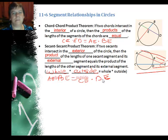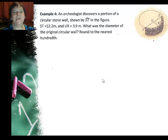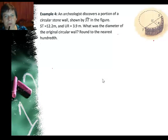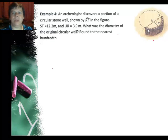So let's go ahead and apply these. We have an archaeologist discovers a portion of a circular stone wall shown by arc ST in the figure. So the stone wall is right here on arc ST. We know that ST, the segment, this chord is 12.2 meters, so they took some tape and measured it, and then they measured the distance from here to there.